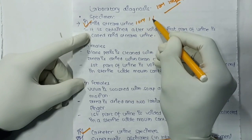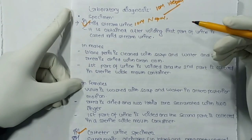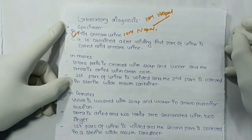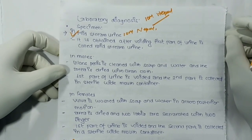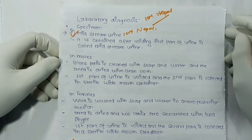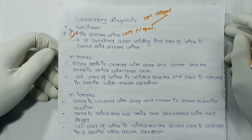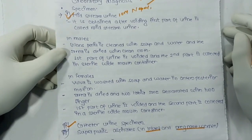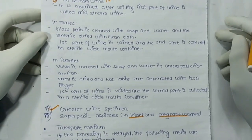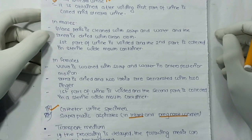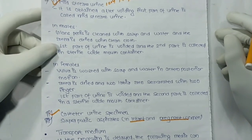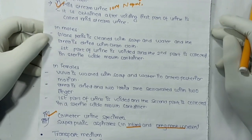Mid-stream urine collection is a common IOM exam question. Mid-stream urine is obtained after voiding the first part of urine. In males, the glans of the penis is cleaned with soap and water, the area is dried with a clean cloth, the first part of urine is voided, and the second part is collected in a wide-mouth container. In females, the vulva is washed with soap and water in an anterior-to-posterior motion, the area is dried, the labia are separated with two fingers, the first part is voided, and the second part is collected in a wide-mouth container.